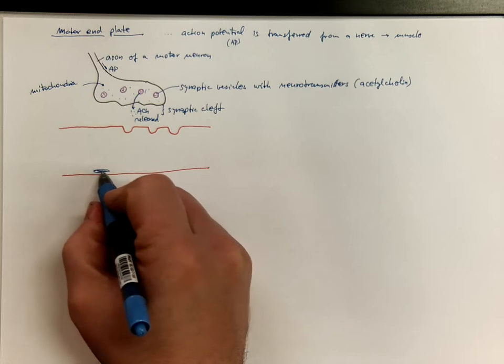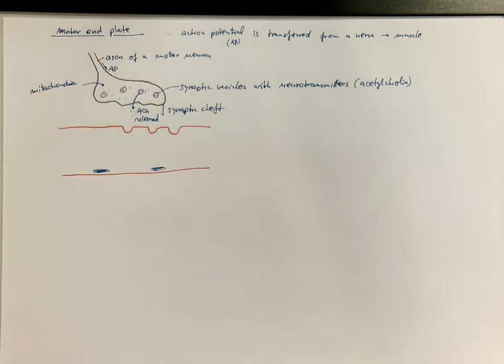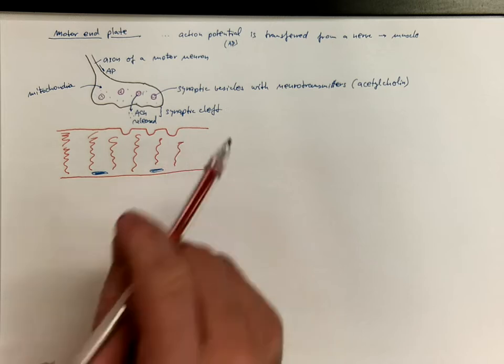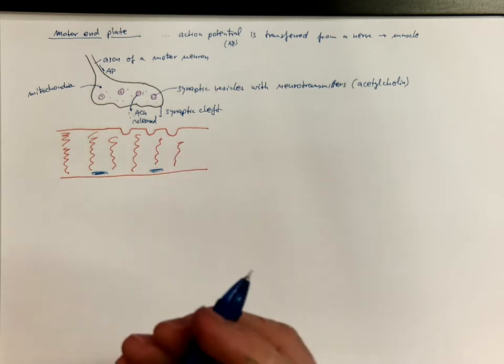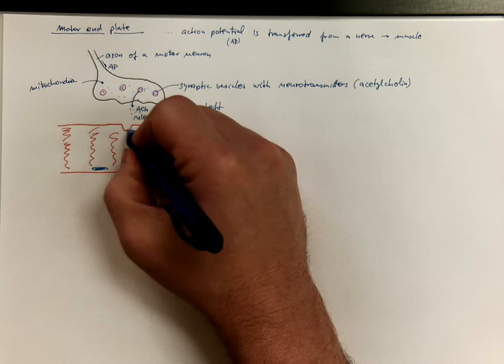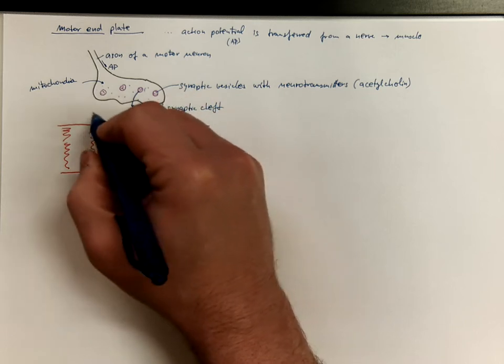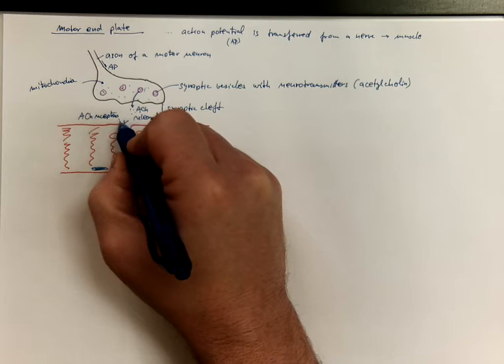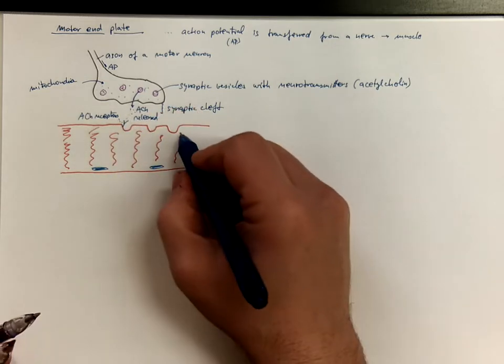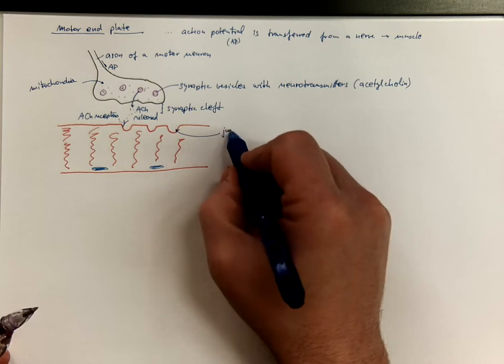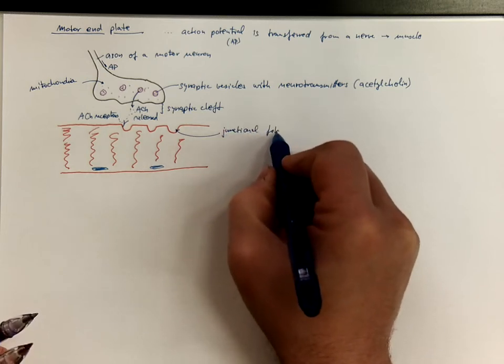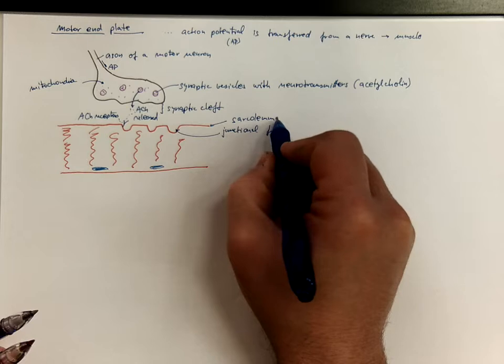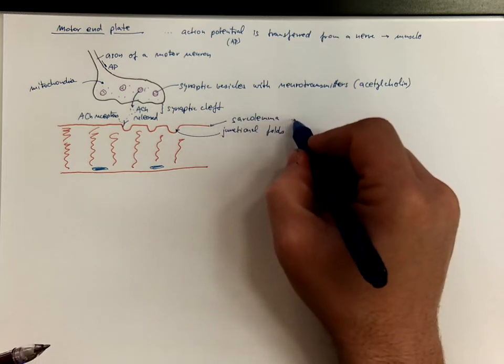We know it has multiple nuclei on the periphery. It has this striation pattern. So here are acetylcholine receptors binding the acetylcholine. These folds are called junctional folds. And this is the sarcolemma which works here as a postsynaptic membrane.